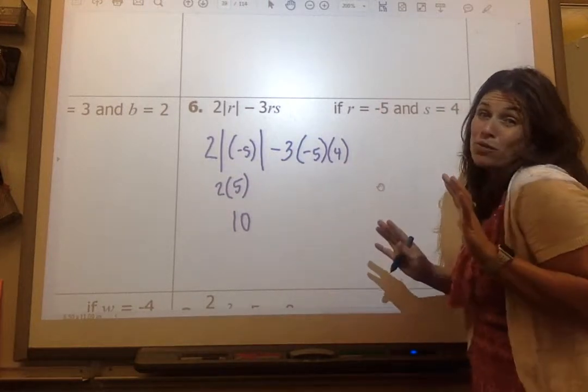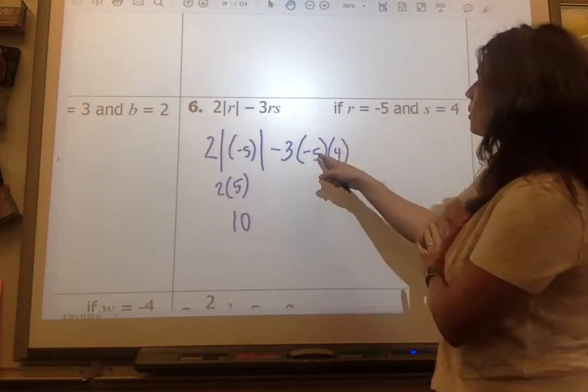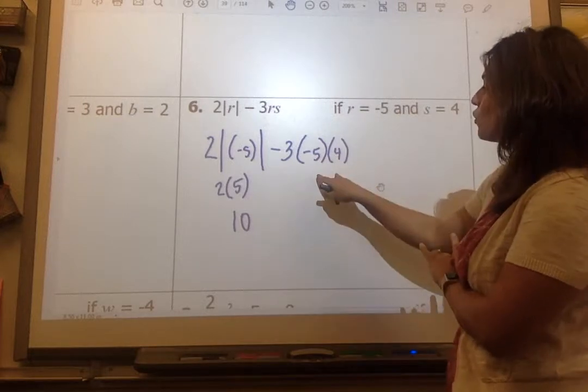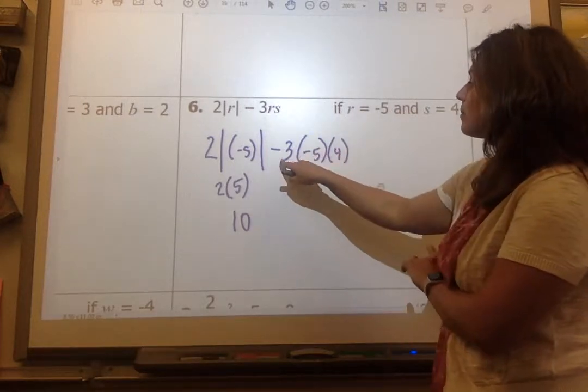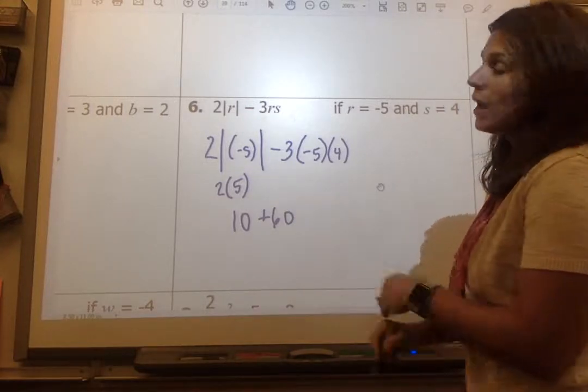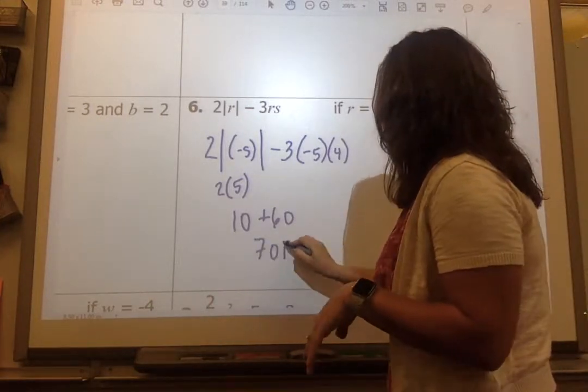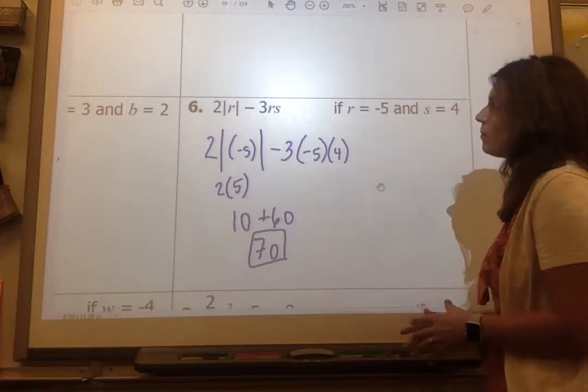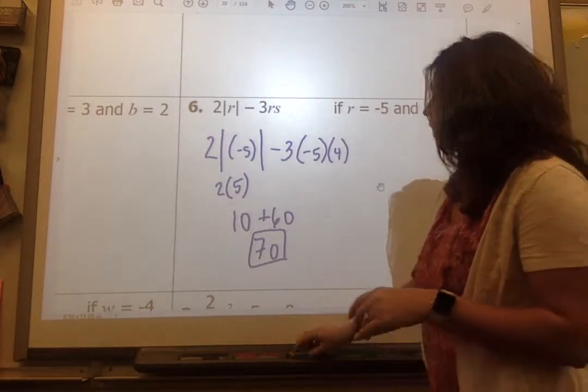I am multiplying these three numbers together. Commutative property says it doesn't matter which way I multiply it. So I'm going to multiply 5 times 4 is negative 20. Negative 20 times negative 3 is a positive 60. And when I add them together, 70 is my final answer.